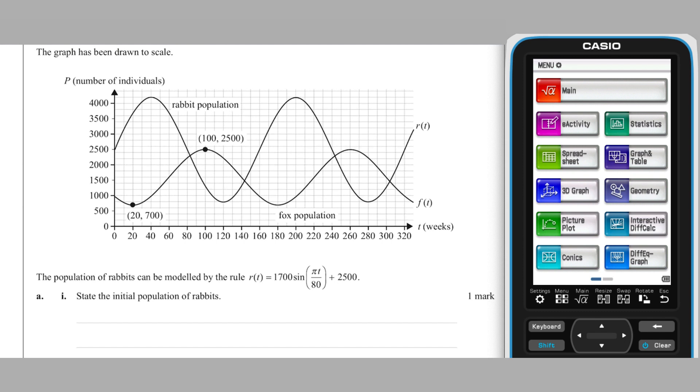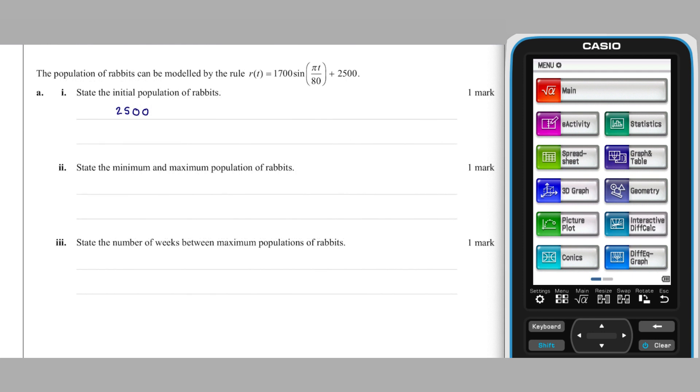Part A part 1: The initial population of the rabbits will be r of 0, which as sine of 0 is 0, is 2500 as shown on the graph. Part A part 2: As the function that models the rabbit population is a trigonometric one,